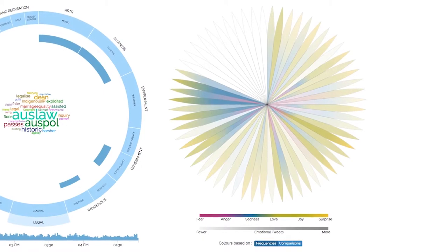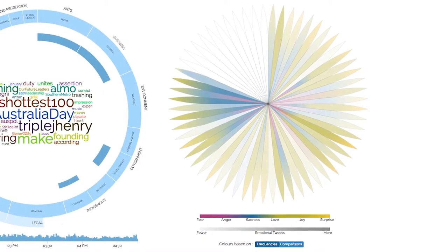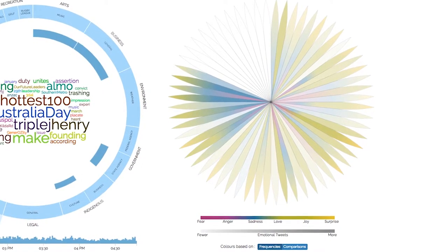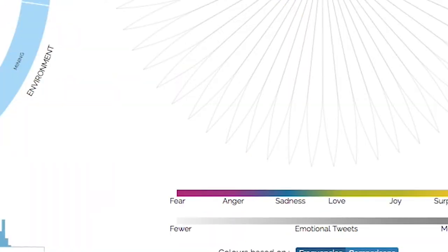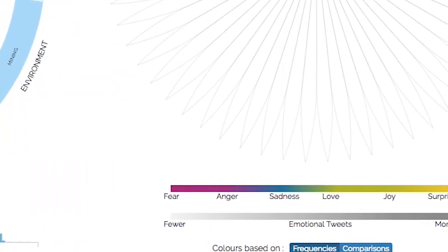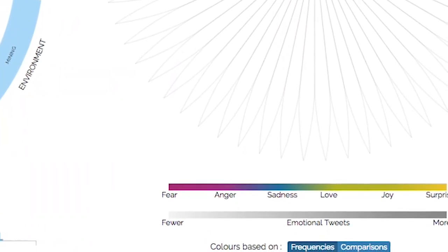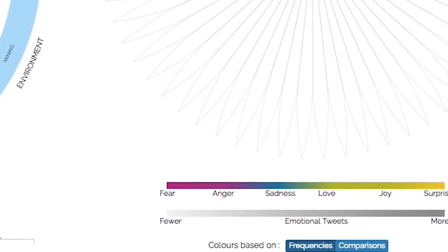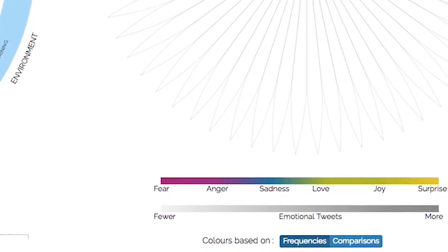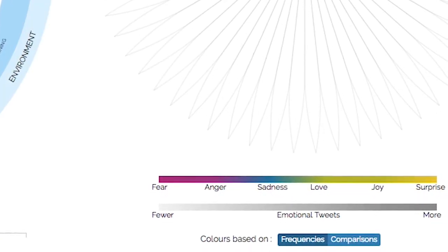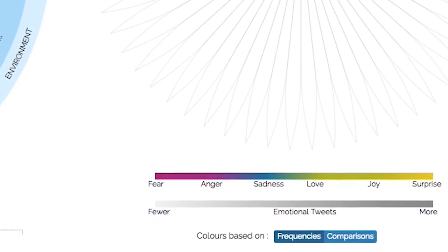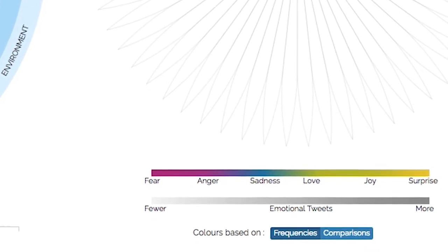Those emotions are all generated live, and over the course of an hour the flower petals fill up with a visualisation of those emotions. Each emotion has a slightly different colour.